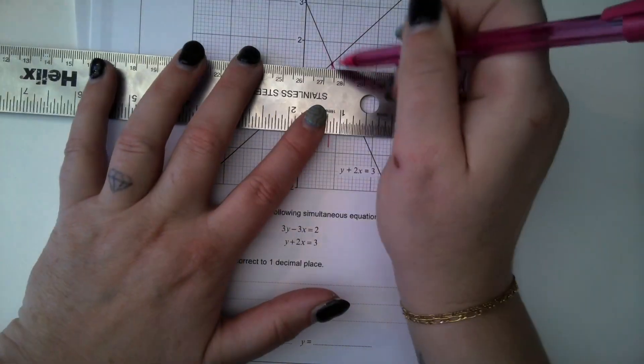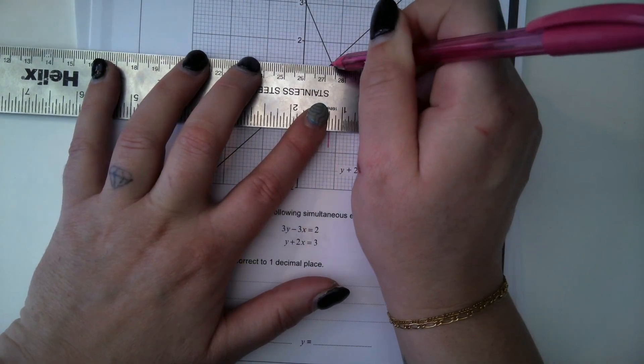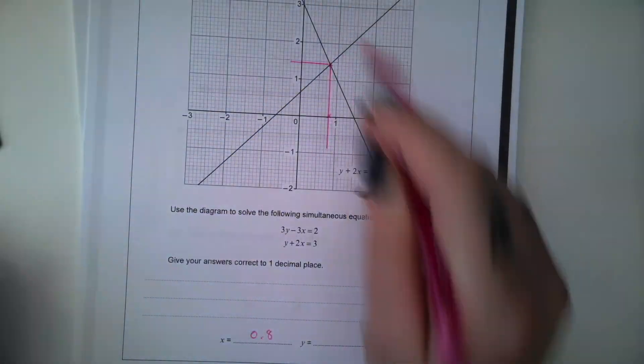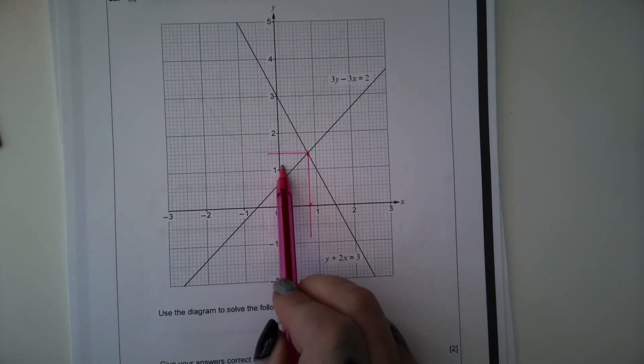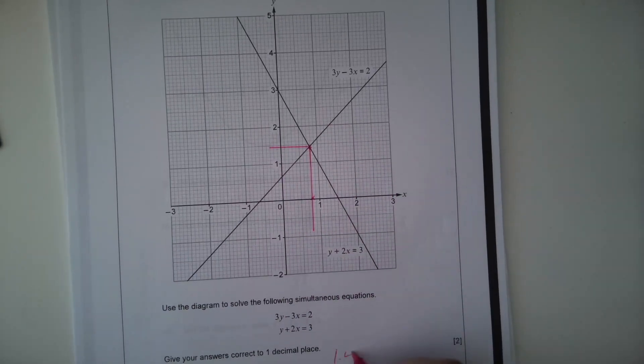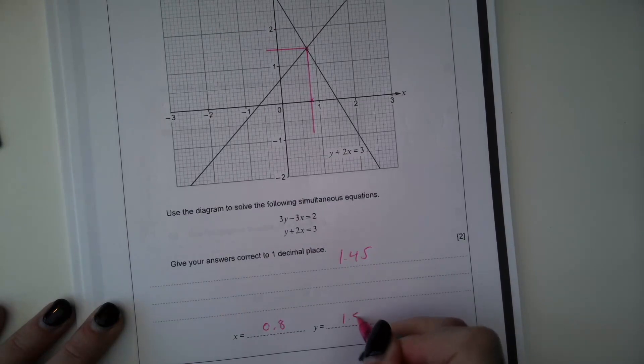And then when we go across the Y from that point of intersection, you can see it's somewhere in the middle there. So 1, 2, 3, 4, 1, 2, 3, 4, 5. But it wants it to one decimal place so I'm going to round that to 1.5.